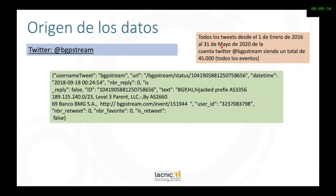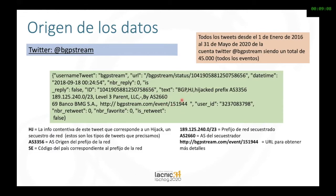What do we have? When you fetch a tweet — here we're speaking of automated data — you obtain all this. In Python, this is a data structure known as a dictionary. Basically, this is what you obtain from Twitter. The piece I wanted to pay attention to is the part after the text, because this brings all the relevant information: whether it's a hijack, the hijacked prefix, and the autonomous system.